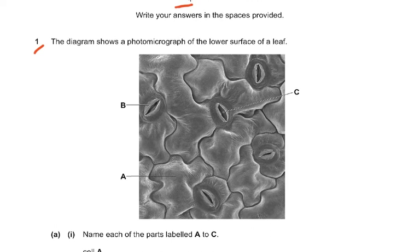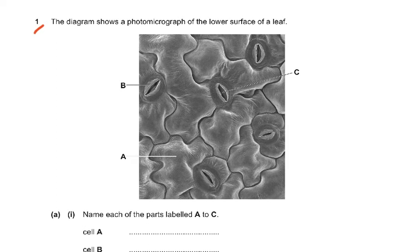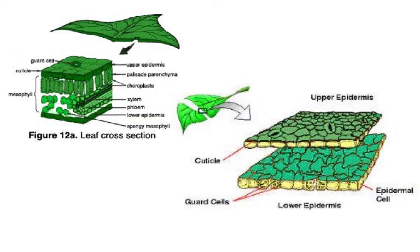Question one: the diagram shows a photo micrograph of the lower surface of a leaf. Some of you are clear about it, some are not. A section has been taken from the leaf, and we see the upper epidermis, palisade, spongy mesophyll, chloroplasts, and then if you separate the upper and lower epidermis, you see guard cells. In dicots, the stomata are on the lower surface.